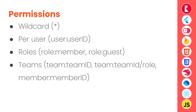Next, teams. Teams have a few permission rules. First, team:teamID means any member of that team can access the resource. team:teamID/role means any member of the team with that particular role can access the resource. Finally, member:memberID means a particular member of a team can access it — and here the member ID is actually the membership ID.